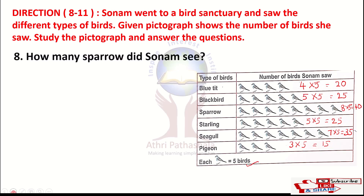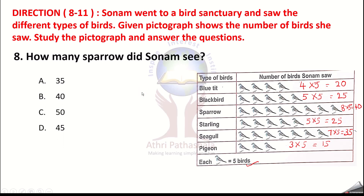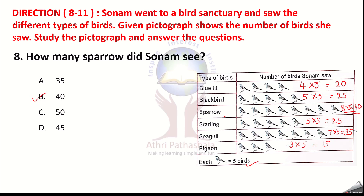Question 8: how many sparrows did Sonam see? The sparrow row shows a total of 40 sparrows. Option B is the correct answer.